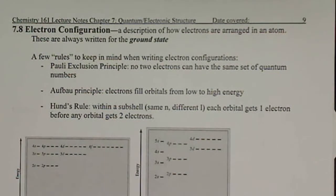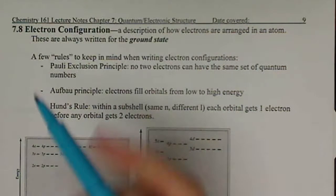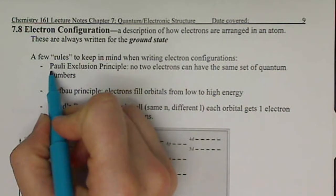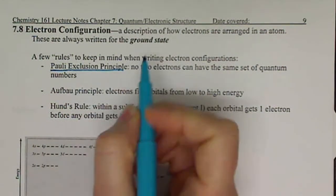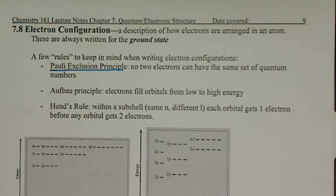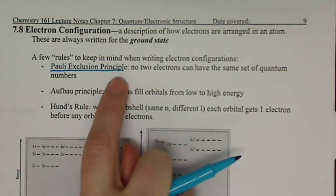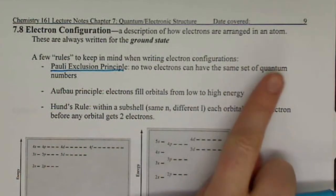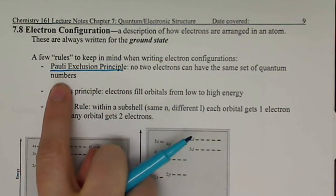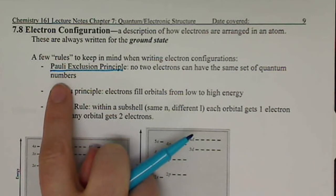Some rules that we're going to keep in mind. You do not need to memorize these rules, but we are going to apply these rules when we write out our electron configurations. Our Pauli exclusion principle says that no two electrons can have the same set of quantum numbers. And that's essentially what we just worked with, working through our set of four quantum numbers.